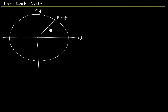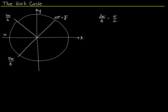If this is 1 pi over 4, then this is the next pi over 4 — that's 2 pi over 4s. 2 pi over 4s is pi over 2, which is 90 degrees. Adding a third pi over 4 gets you to 3 pi over 4. The next pi over 4 puts you at 4 pi over 4, or pi. Then we have 5 pi over 4, 6 pi over 4 or 3 pi over 2, 7 pi over 4, and 8 pi over 4, which is 2 pi.